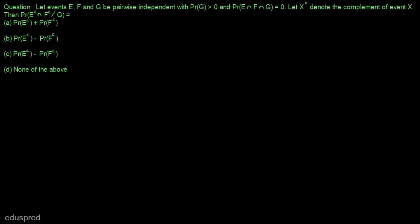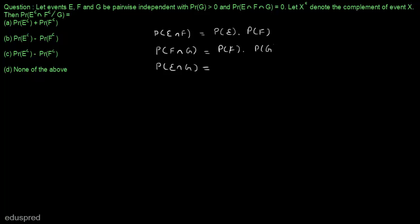We are given that E, F and G are pairwise independent. Pairwise independent means that probability of E intersection F equals probability of E multiplied by probability of F, and probability of F intersection G equals probability of F multiplied by probability of G, and probability of E intersection G equals probability of E multiplied by probability of G. If these three conditions hold, we say that E, F and G are pairwise independent.